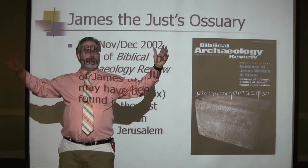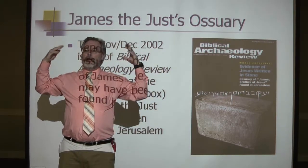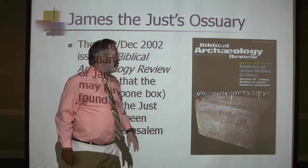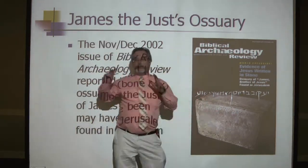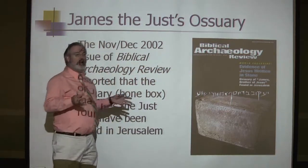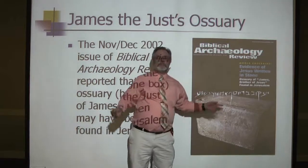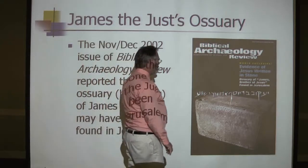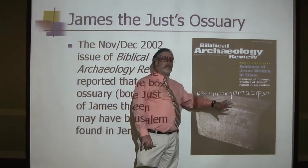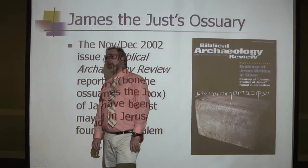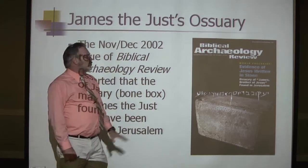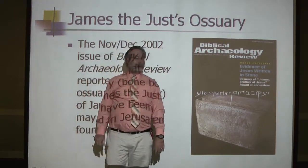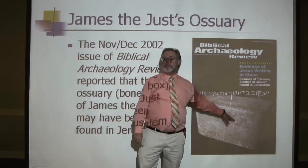You would lay somebody out in a tomb, typically for a year. The body would rot away enough that all that was left was the bones. Then somebody would come in, pack all the bones up, put them in a bone box, and place the ossuary on a shelf somewhere. Often they would identify who the person was. This is actually a standard first-century bone box, very typical for the period. They found other bone boxes that looked almost exactly like this one. There is no reason to doubt that this is a first-century bone box, nor is there reason to doubt the first part of the inscription on it.